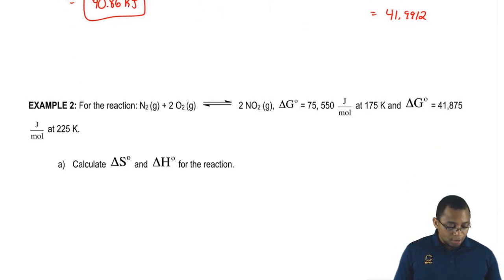We have our delta G, our first delta G equal to 75,550 joules over moles at that temperature of 175 Kelvin. Then we're going to have a second delta G equal to 41,875 joules over moles at 225 Kelvin.